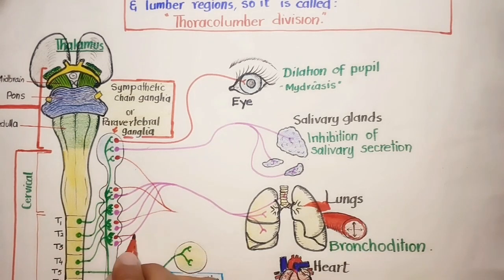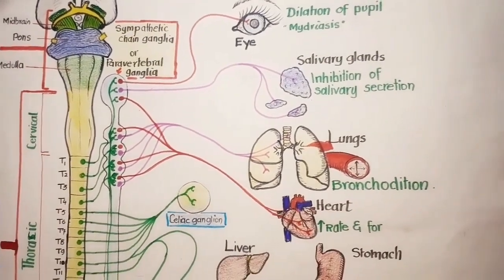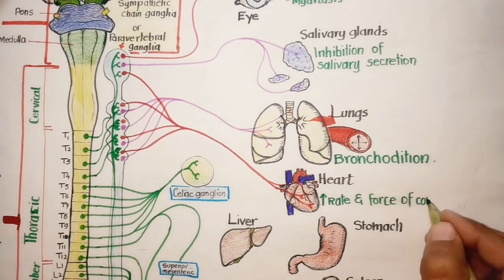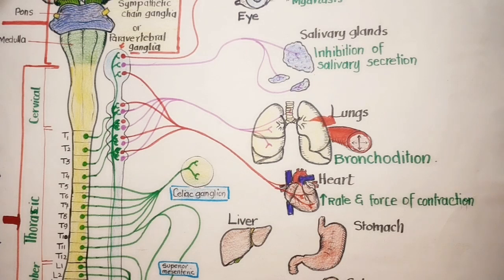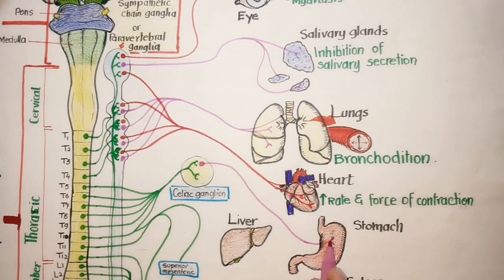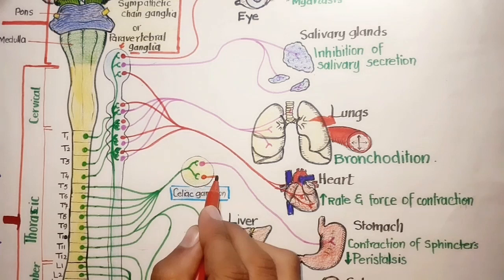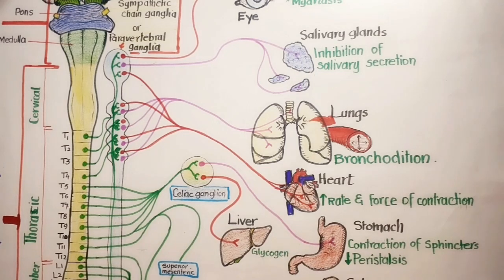The heart receives sympathetic supply from different regions of the sympathetic chain ganglia, and postganglionic stimulation results in an increase in the rate and force of contraction of the heart. The postganglionic nerves from the celiac ganglion targeting the stomach lead to contraction or closing of sphincters and decreased peristalsis. The liver, in response to sympathetic impulses, increases the conversion of glycogen into glucose.